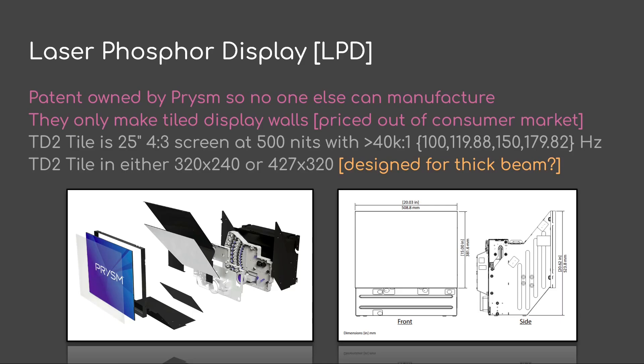Moving on to laser scanning into a phosphor — that patent is owned by Prism, so nobody else can manufacture one. The problem is that Prism only makes tiled display walls, priced completely out of the consumer market. They're designing for a thick beam, and their individual tiles have resolutions like 320x240 or 427x320 at a 25-inch diagonal. So the beams are actually pretty thick, meaning they're probably not great if you try to pull a single tile out and use it as a screen.